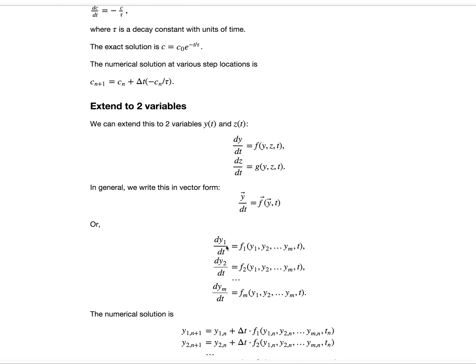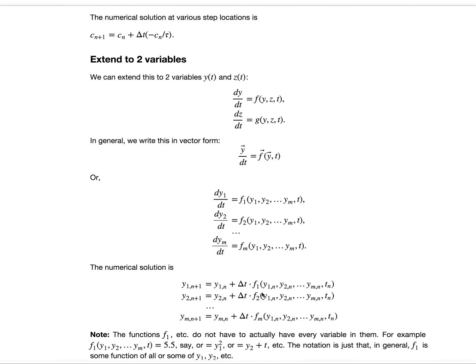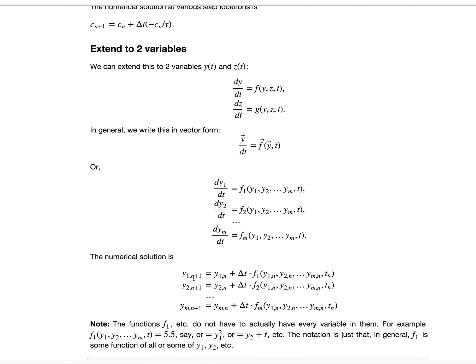To write this out in component form, we would have dy1 dt equals f1, which is a function of all the y's, y1, y2, y3, to ym, and time. dy2 dt is f2 of all the variables. dym dt is fm of all the variables. The numerical solution would be written out in the same way. The new values of y are the old values of y plus delta t times the individual functions. All the information is known on the right-hand side because we always know all the information at our current time starting with the initial condition.